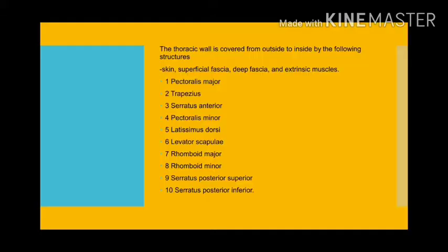It is supplied by the sympathetic part of the autonomic nervous system, from the lateral horn of thoracic T1 to T12 segments of the spine. The thoracic wall is covered from outside to inside by skin, superficial fascia, deep fascia, and extrinsic muscles. The muscles of the pectoral region include pectoralis major, trapezius, serratus anterior, pectoralis minor, latissimus dorsi, levator scapulae, rhomboidus major, rhomboidus minor, serratus posterior superior, and serratus posterior inferior.